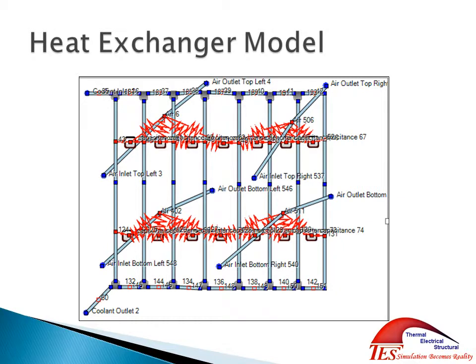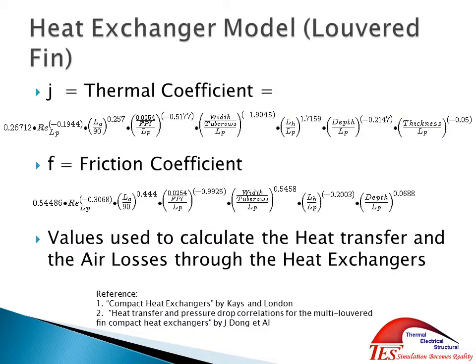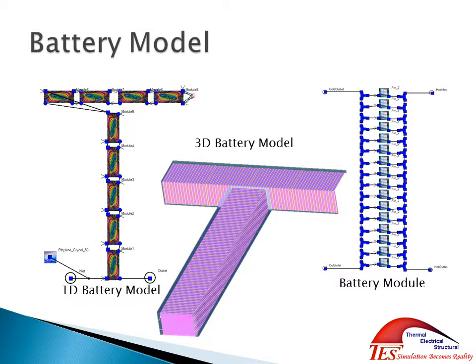The heat exchanger is modeled using a Kays-London approach. We have different quadrants that are run using a JF model, and the properties are taken from a paper on Louvered-fin heat exchangers. This is all built into the component model itself, and if you have any different correlations, those can be entered in as well. The battery model includes both 1D and 3D components — a 3D battery model with different modules, each containing sub-component within sub-component within sub-component — and the cooling fins are made up of multiple flow bars going through the fins in the 3D model.